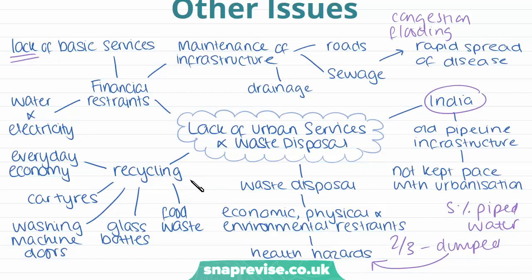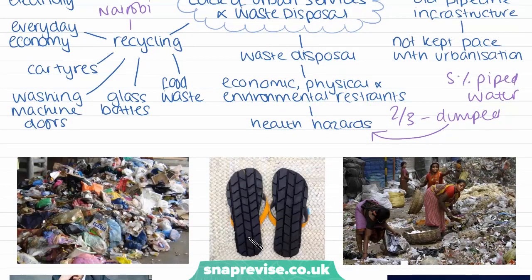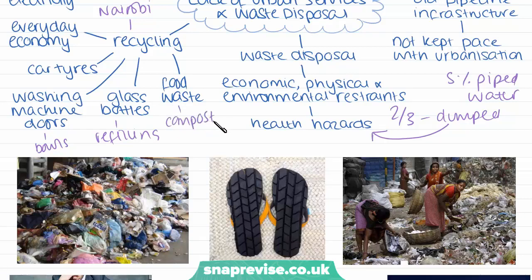In other cities, refuse is also seen as an opportunity to make money. In Nairobi, recycling is an important part of everyday life. Things that are recycled include old car tyres, which can be used to make sandals, washing machine doors used as kitchen bowls, glass bottles collected and returned to stores for refilling, food waste fed to animals or used as compost, and tin cans and oil drums used to make charcoal stoves, lamps, buckets and metal tips of ploughs. Recycling is a very big part of daily life in many lower income cities.